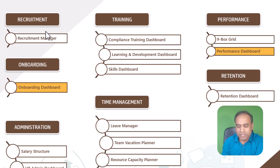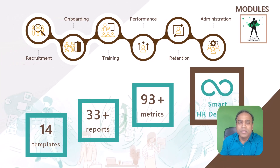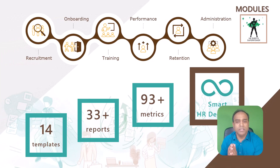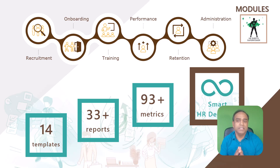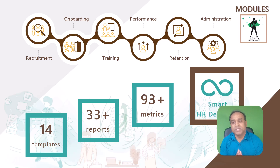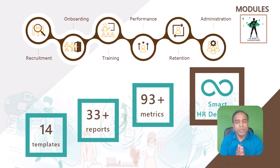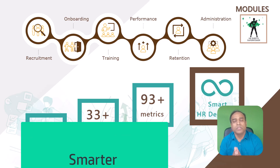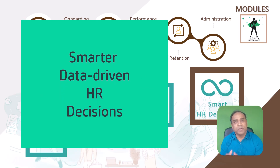These are the 14 templates that are part of the bundle. We have more than 33 reports included in this bundle, and we cover more than 93 HR metrics automatically calculated for you across all these templates. All of this is designed with only one goal in mind: to help you, the HR decision maker, take smarter data-driven decisions.